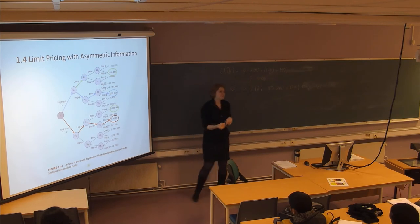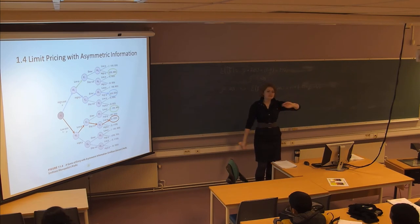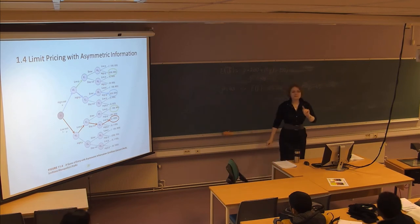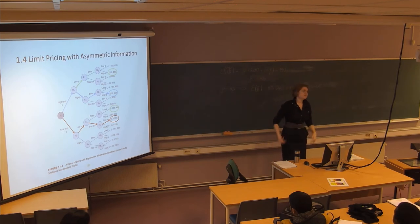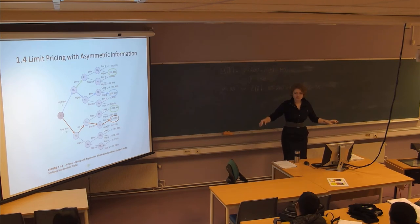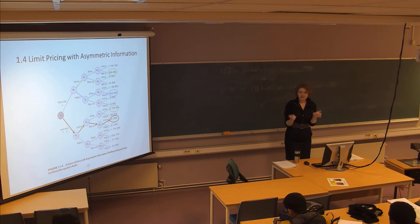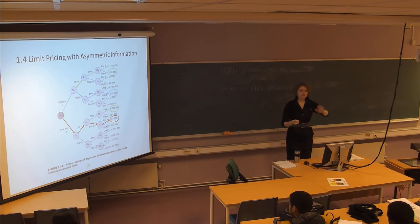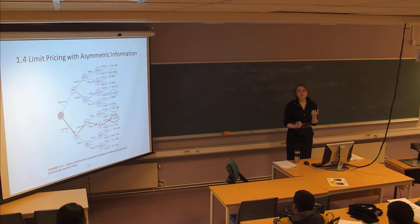Nash equilibrium is not a 100% guarantee of what will happen, but it always points to something interesting — the outcome most likely to occur. In real life, players may not understand the rules at first and won't immediately reach Nash equilibrium. But if the game is repeated many times, players start to understand the logic and eventually converge to Nash equilibrium. Nash equilibrium is a solution concept that points to interesting outcomes and helps you reason about market situations.